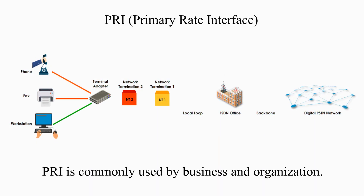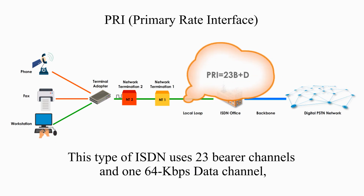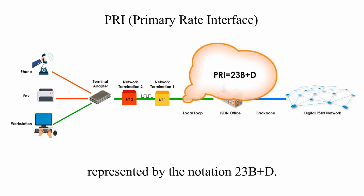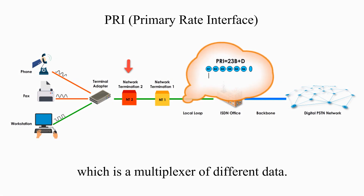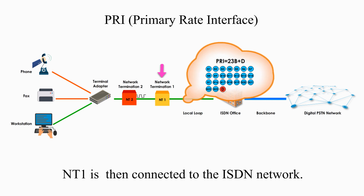PRI is commonly used by businesses and organizations. This type of ISDN uses 23 bearer channels and one 64 kbps data channel, represented by the notation 23B+D. In a typical PRI setting, there is an actual device called Network Termination 2, or NT2, which is a multiplexer of different data. NT1 is then connected to the ISDN network.